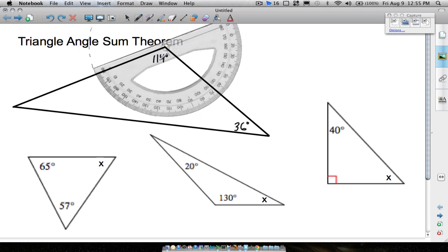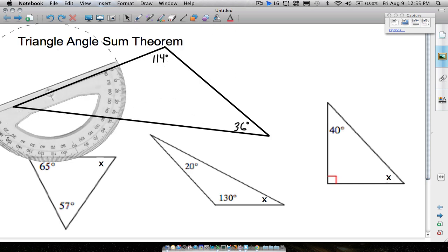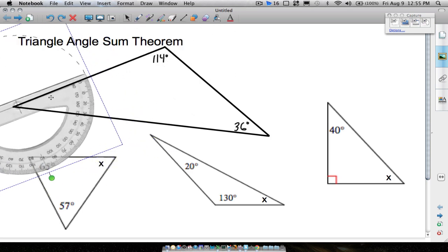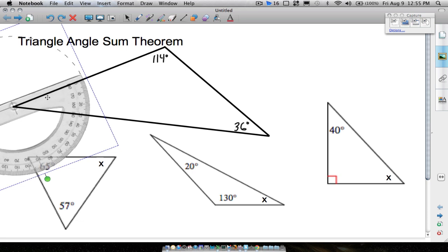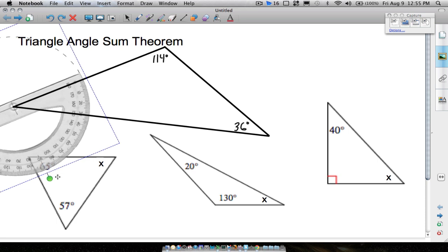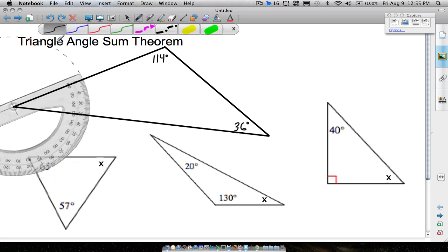It's an obtuse angle because it's bigger than 90 degrees. And now let's do this last one. So again, I'm lining up that center point on the protractor and let's line up zero. All right, so there's zero, 10, 20, 30. It looks like it's right about pretty close to 30 degrees, right on point.